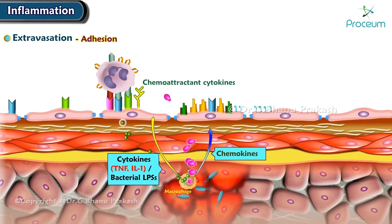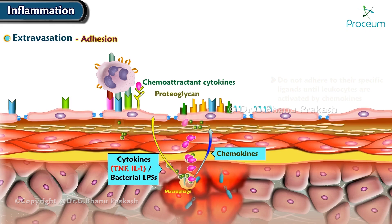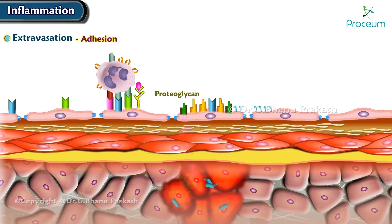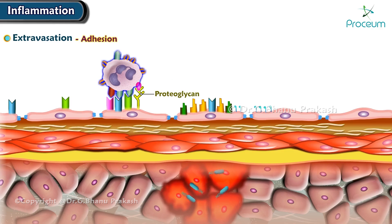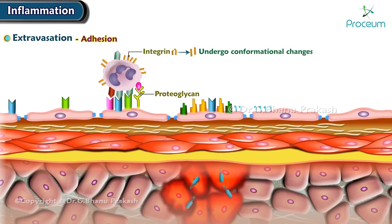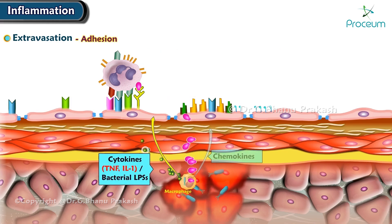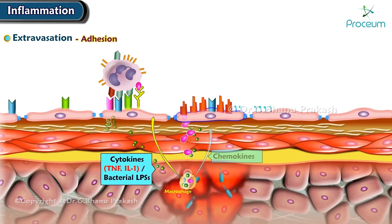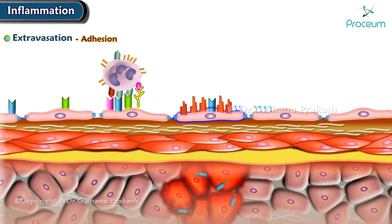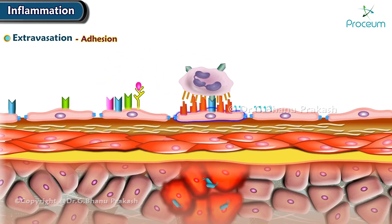Chemokines are chemoattractant cytokines that bind to endothelial cell proteoglycans and are displayed at high concentrations on the endothelial surface. When the rolling leukocytes encounter the displayed chemokines, cells are activated and their integrins undergo conformational changes and cluster together, thus converting to a high affinity form. At the same time, other cytokines, notably TNF and IL-1, activate endothelial cells to increase their expression of ligands for integrins.